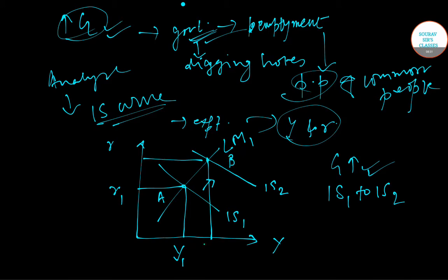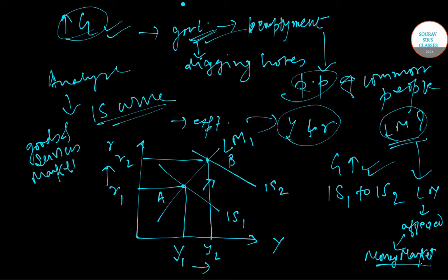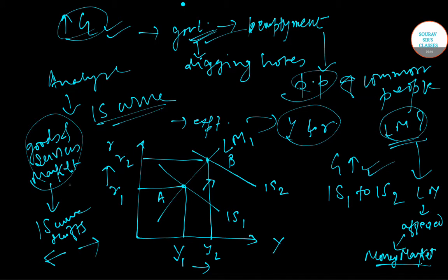Initially the equilibrium was at point A, with output at Y1 and interest rate at R1. After the increase in government expenditure the equilibrium shifts to point B, output increases from Y1 to Y2, and the interest rate rises from R1 to R2. The LM curve does not shift because it is only affected when there is a change in the money market. Whenever there is a change in the goods and services market, only the IS curve shifts — either to the right or to the left.